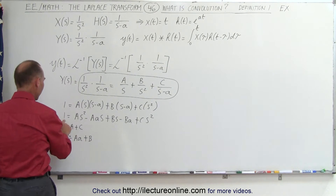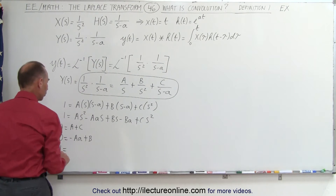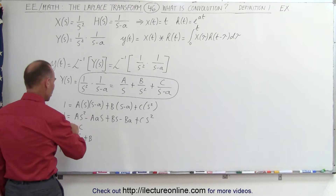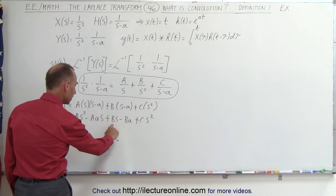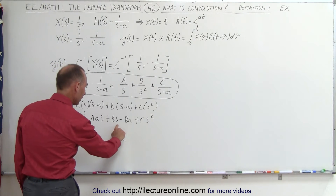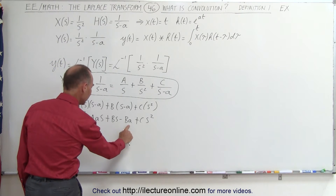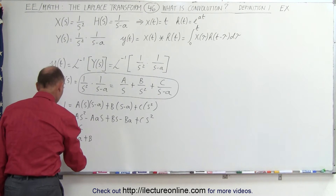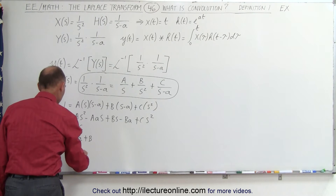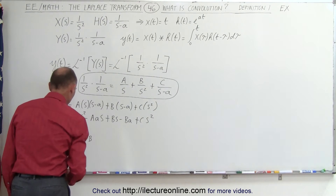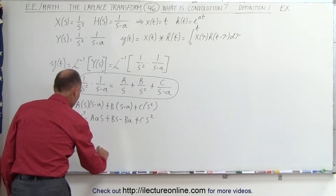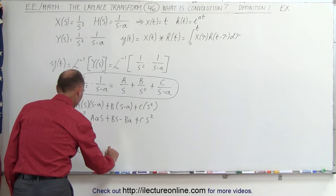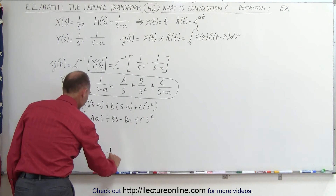Finally, we have the constant term: 1 is equal to the constant on the right side, which is minus B·a. So B equals minus 1/a.